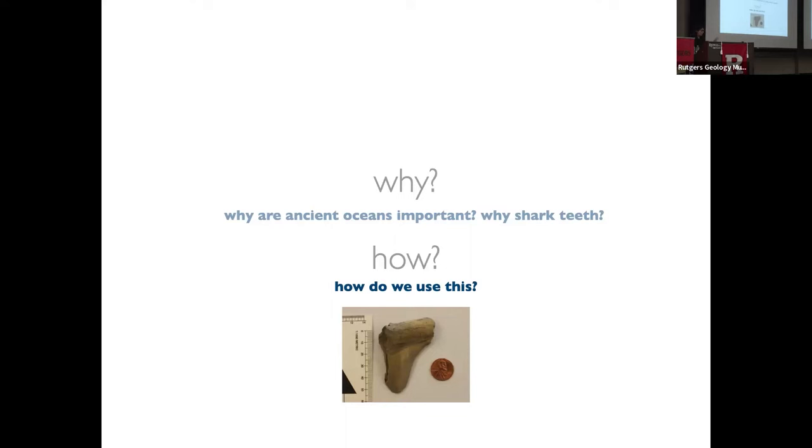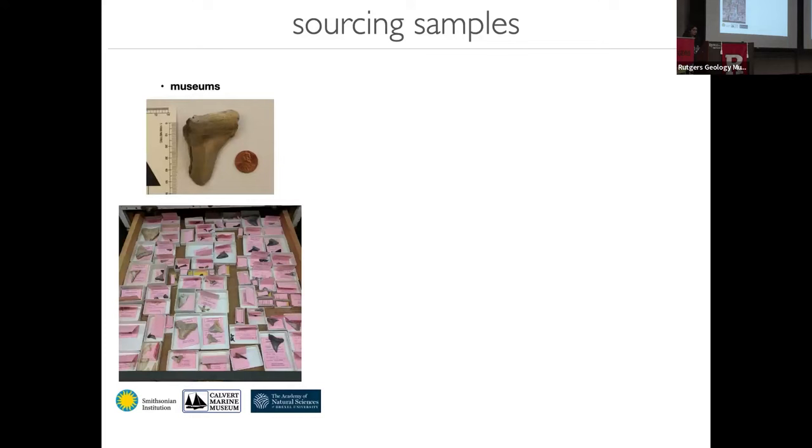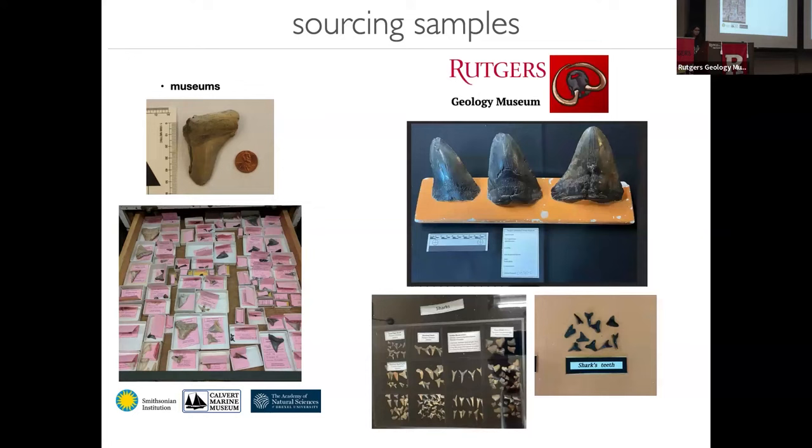How do we use a tooth such as this? Where do we even get them from? And then how do we use it and how do we reconstruct anything about ancient environments or the ocean in this case? So sourcing samples, that's the first thing we have to worry about. A lot of our samples come from museum collections, primarily the ones that I've included or I've studied have been from the Smithsonian Institution in Washington, D.C., the Calvert Marine Museum, which is in Maryland and is by the Calvert Cliffs, which are one of those great sites where you could just walk on the beach and find a whole bunch of shark teeth. And then the Academy of Natural Sciences at Drexel University.